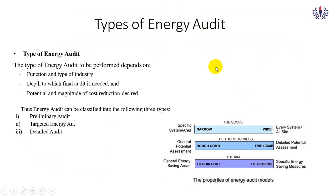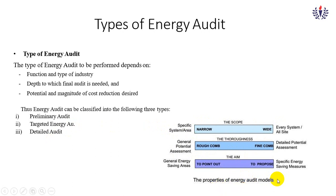There are types of energy audits depending on the function and type of industry, the depth to which the final audit is needed, and the potential magnitude of cost reduction. Basically they are classified as preliminary audit, targeted audit, and detailed audit. The scope ranges from specific and narrow to wide. These are the energy audit models, and they aim to propose or point out energy-saving opportunities.